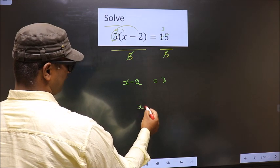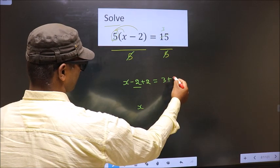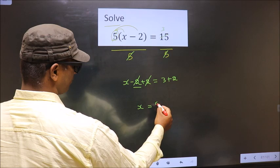So now to get x, you should remove minus 2. To remove minus 2, you add 2. So minus 2 plus 2 cancel out, you get x equal to 3 plus 2, 5.